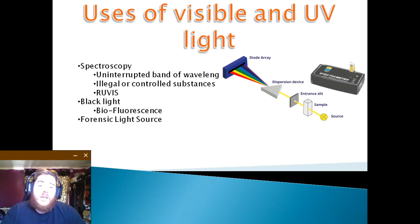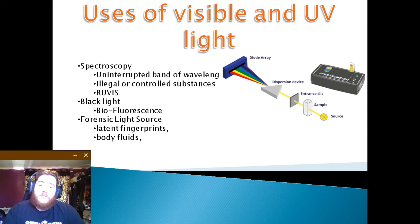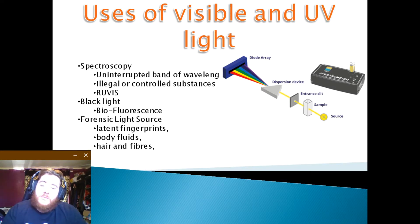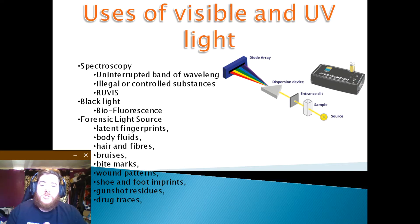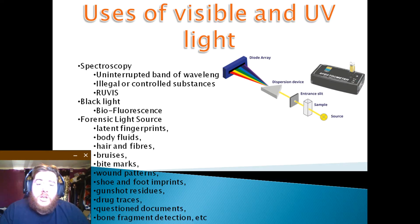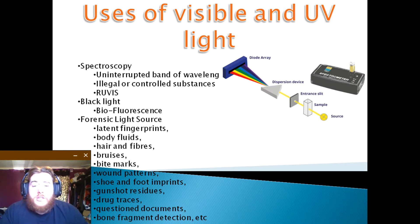By using this, it is possible to see and find latent fingerprints and body fluids, but it is also able to detect hair and fibres, bruises, bite marks, wound patterns, shoe and foot imprints, gunshot residues, drug traces, questioned documents, bone fragment detection, and more. It is a lot more sensitive than traditional methods, allowing a much better and more efficient way of looking for evidence at a crime scene.